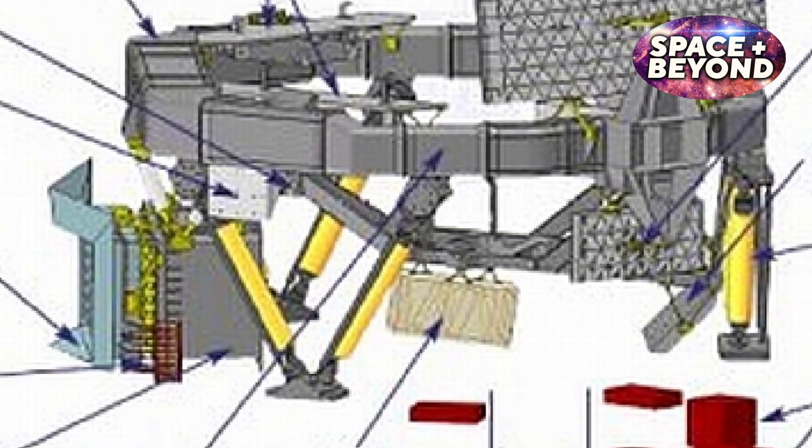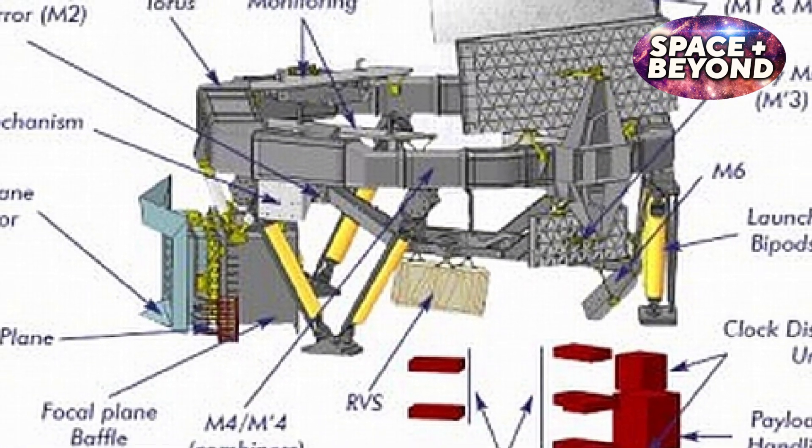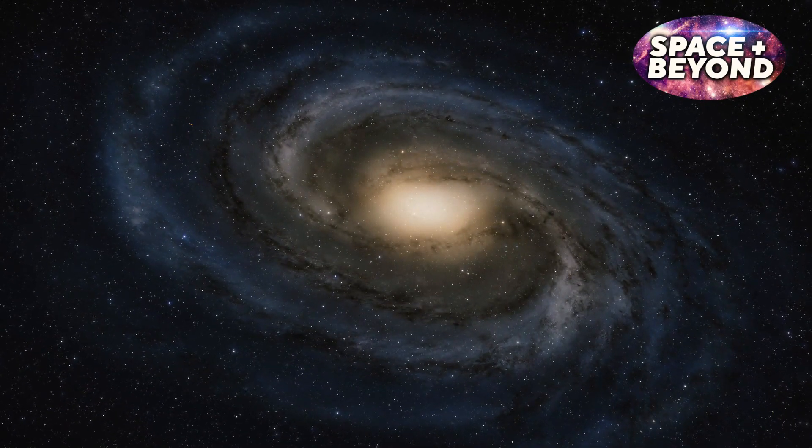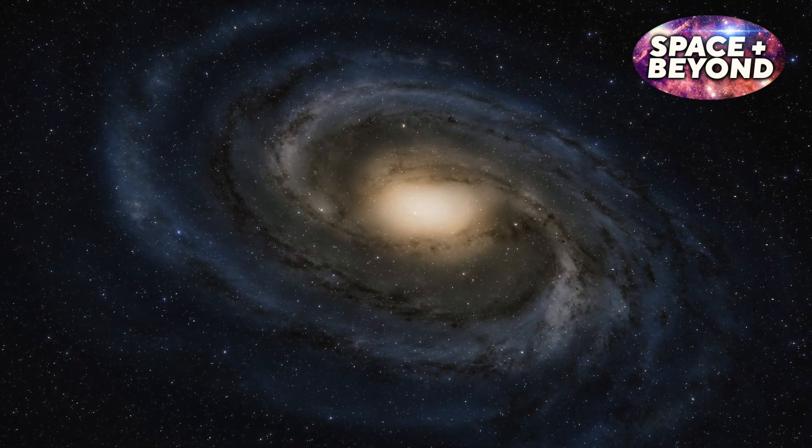Combined with additional detectors and filters, these instruments provide Gaia with the capability to observe faint and distant stars with unprecedented accuracy. Together, they form the basis of Gaia's mission to map our Milky Way galaxy.